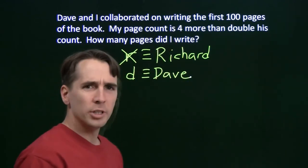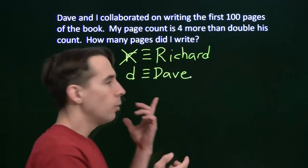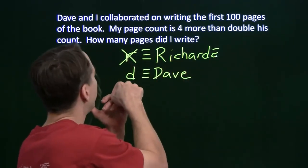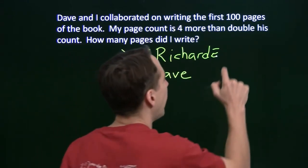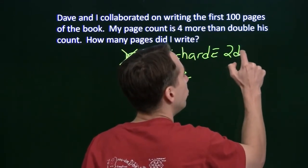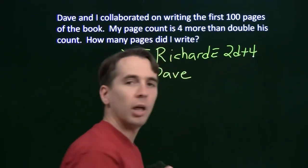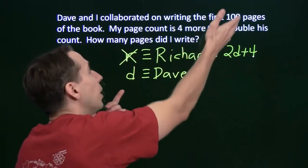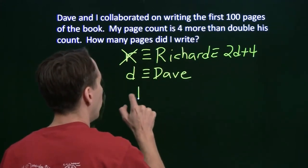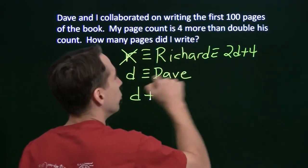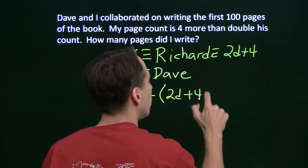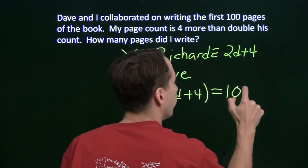Let's see if that helps. My page count is four more than double his. Well, now it's easy to write an expression for me. Double his is 2d, and then I just add four to that. So I'm 2d plus 4. Now I've got expressions for both of us. We can write an equation. These two combined have to be 100. So we've got d plus 2d plus 4. These two add up to 100.